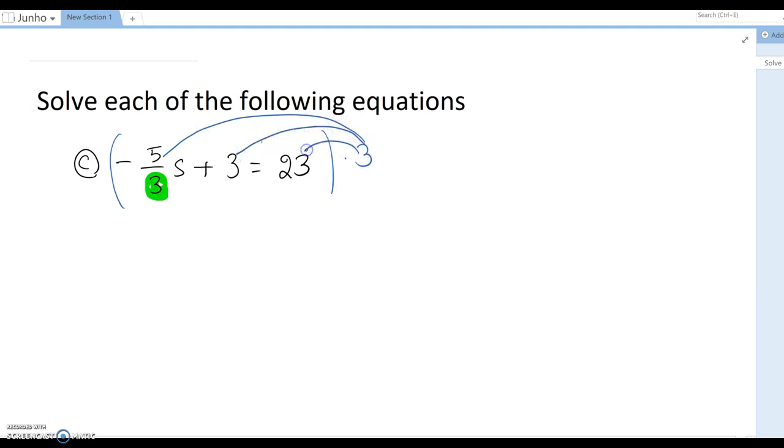Multiply 3 for every term. Then this becomes negative 5 over 3 s times 3, plus 3 times 3, plus 23 times 3 here.